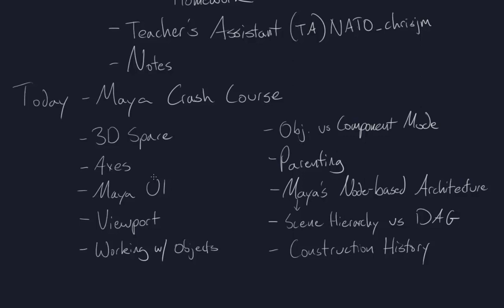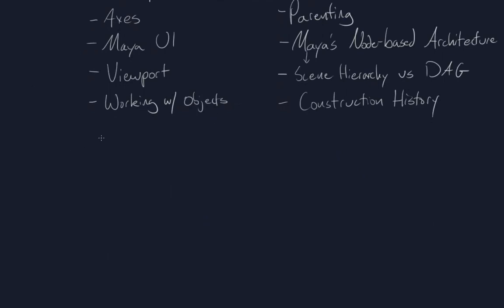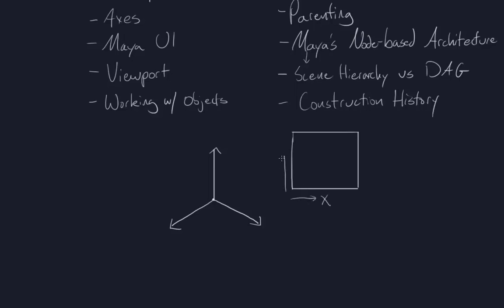The first thing I want to talk about briefly is the concept of 3D space. In 2D space, if you have a two-dimensional grid, you'll generally have two axes: one going horizontally, which is usually X, and one going vertically, which is usually the Y-axis. In 3D space, you end up with a third axis — the Z-axis. The funny thing about Maya is that it handles the Z-axis a little differently than some other applications, like Blender, 3ds Max, and UDK.